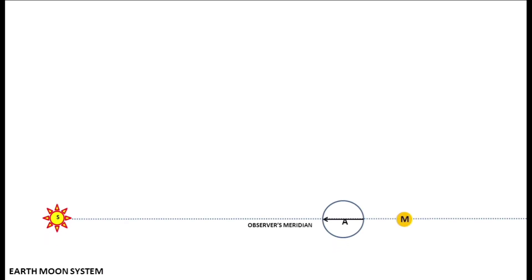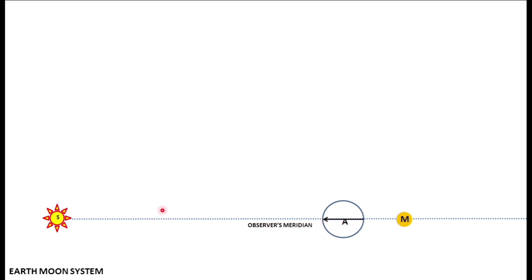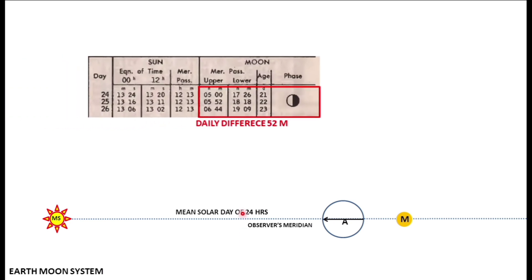We have the Sun and the Moon on the observer's meridian — this is the full moon position. When the Earth rotates and brings the Sun back to the meridian, we call that a mean day of 24 hours. Looking at the Nautical Almanac tables for meridian passage, the Sun returns at nearly the same time each day, whereas for the Moon there is a daily difference of approximately 52 minutes.